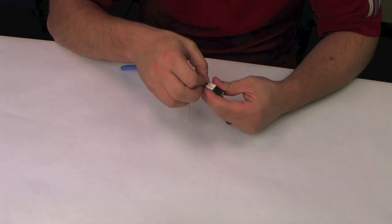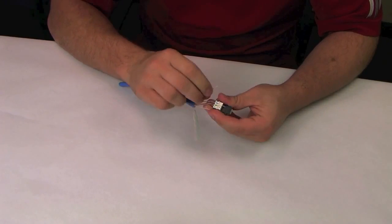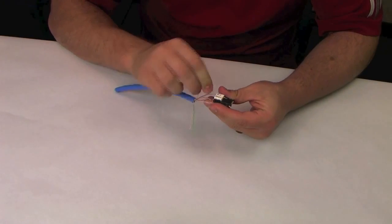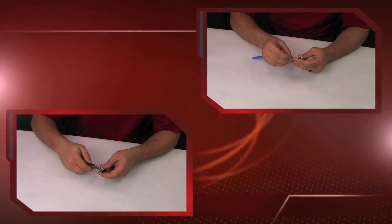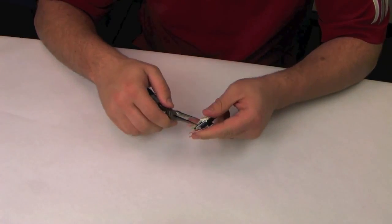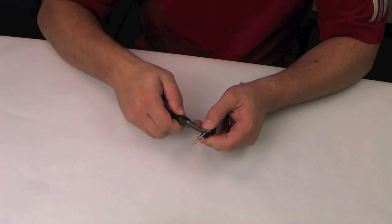Insert conductors into the wire manager guide holes according to T568B or T568A color coding. You can use toothless needle-nose pliers to help thread the conductors through the wire manager.